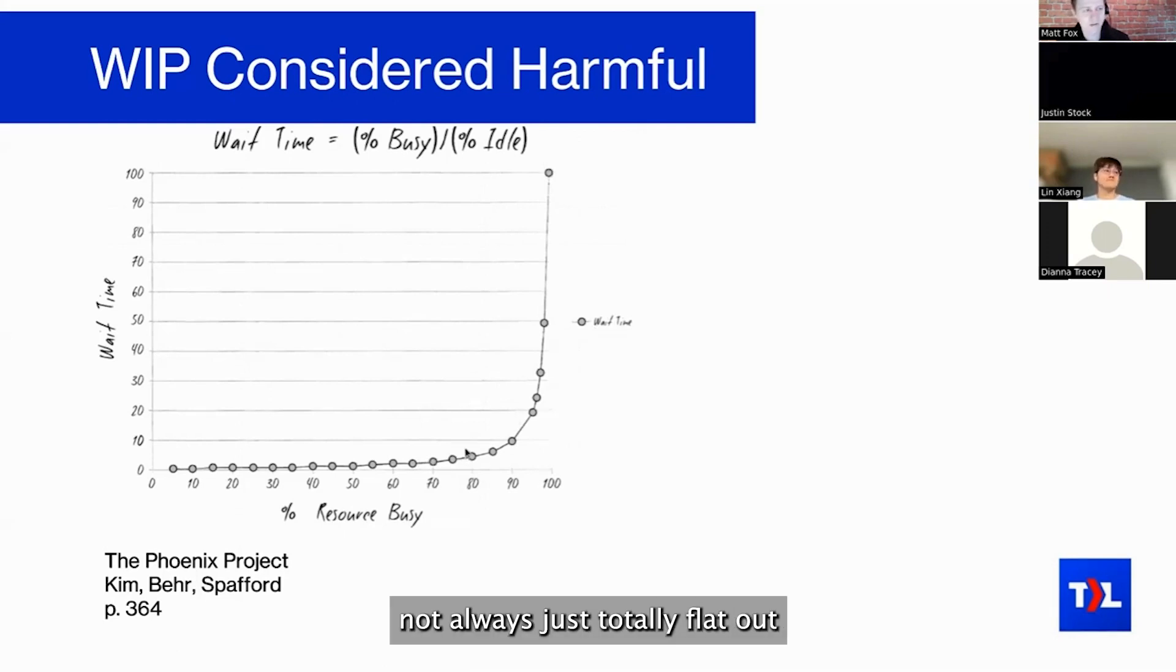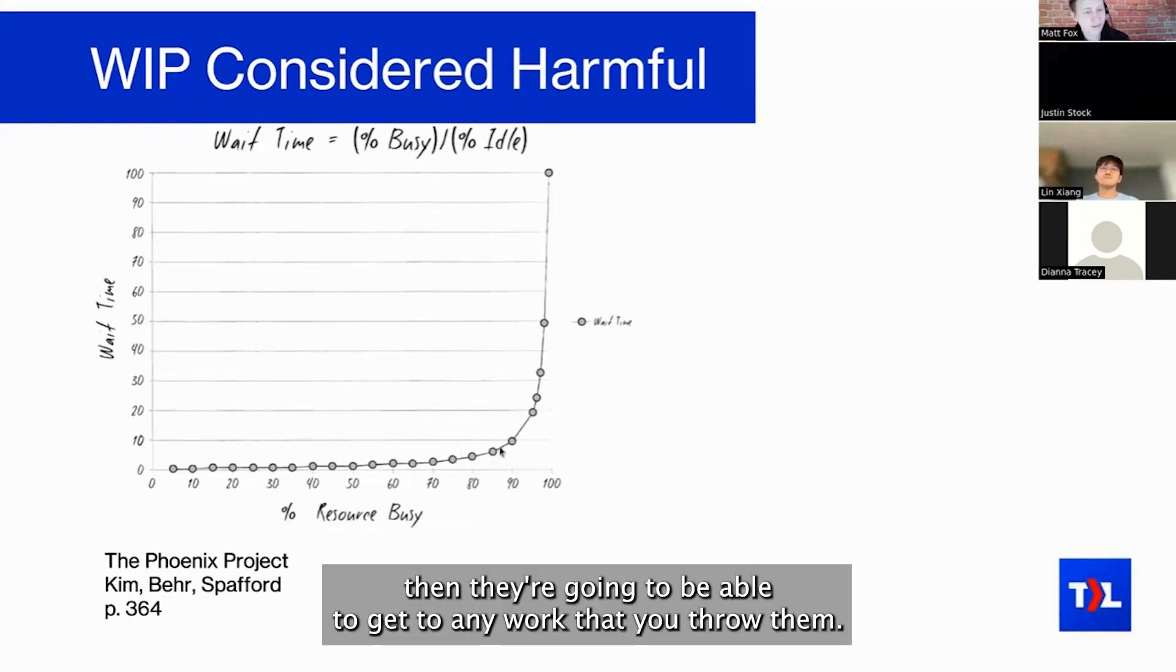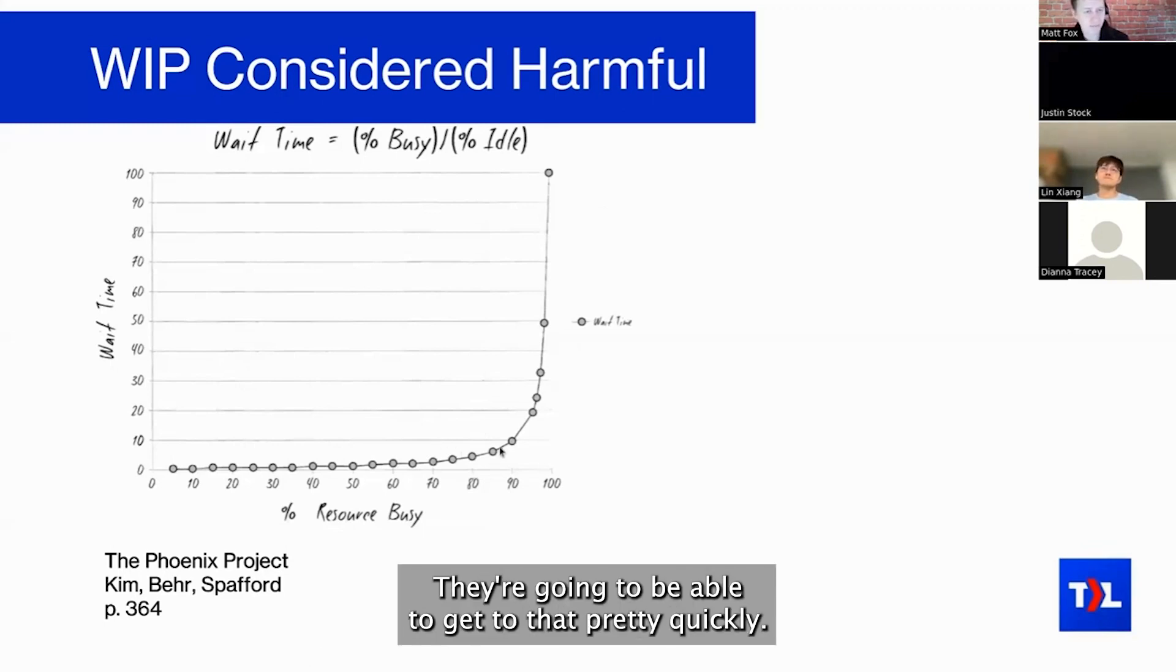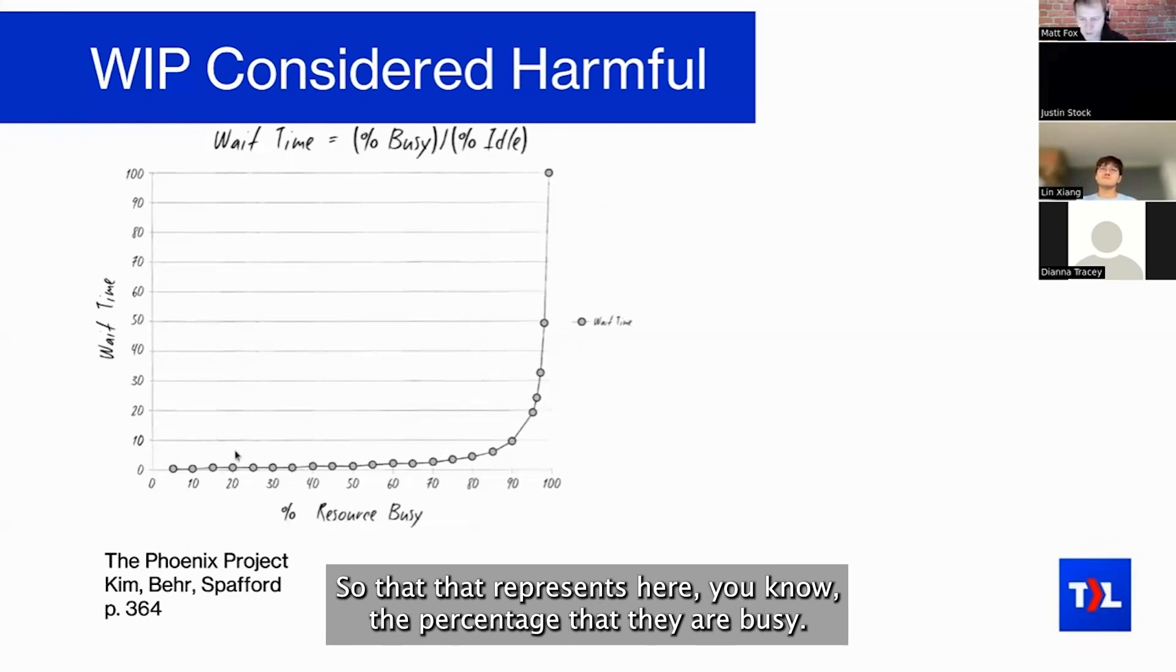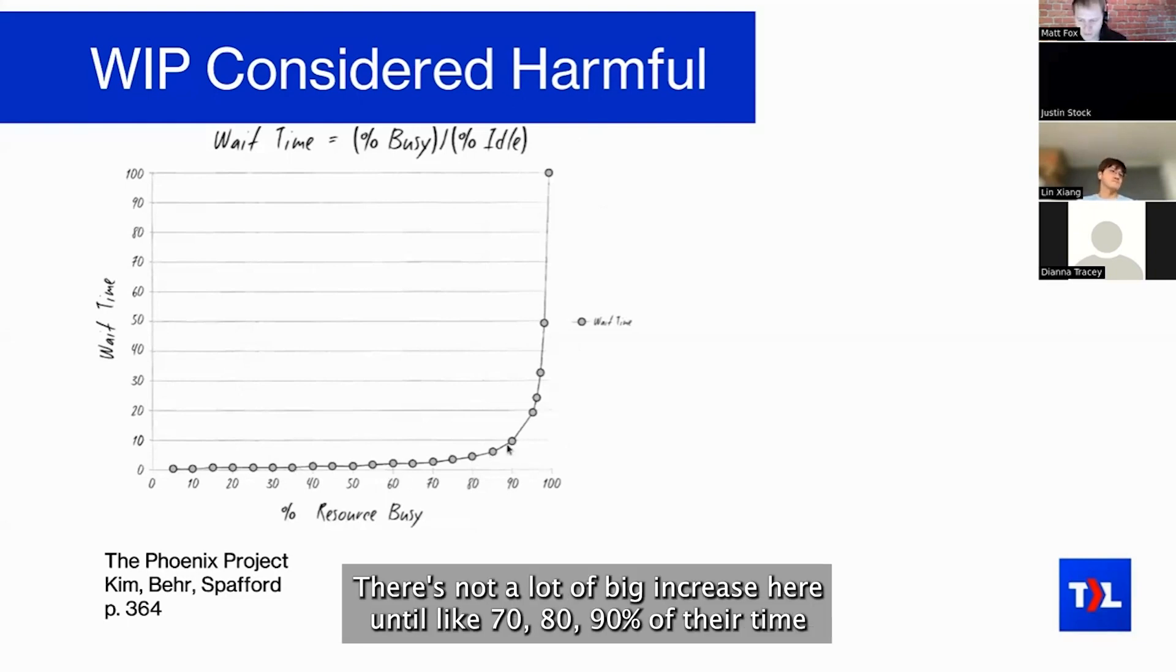That represents here the percentage that they are busy. It's pretty reasonable—there's not a lot of big increase here up until like 70%, 80%, 90% of their time that they're busy. But after you know, starting at kind of 70-80%, the time that it takes for the work to get done goes up a lot.